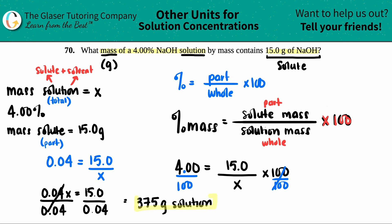So in a 4% NaOH solution that only contained 15 grams, the total solution mass is 375 grams. That kind of makes sense. The percent is low. So that means that for as much solution you have, you're only going to have a little bit of solute.